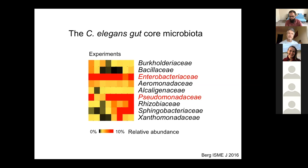We looked for bacteria enriched inside the worm gut compared to their environments, and zeroed in on nine bacterial families we consider the core gut microbiome. You can see those families and their relative abundance in worms across different experiments. In every experiment, starting with a different microbial environment, you still get similar gut microbiomes enriched particularly with Enterobacteriaceae and Pseudomonadaceae.